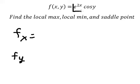So we just do first derivative of e to the power of 2x and you get 2e to the power of 2x cosy.